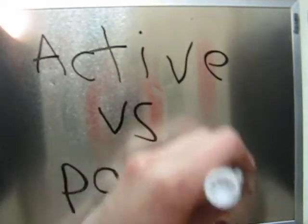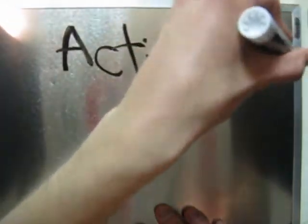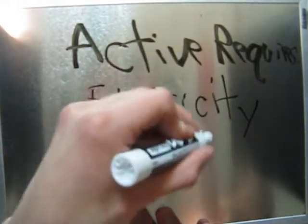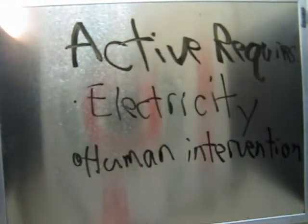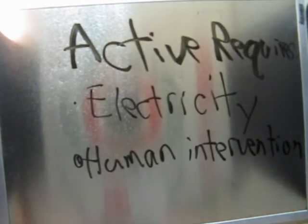So what we're going to be talking about is the difference between passive and active safety features. Active safety features are ones that require things like electricity or direct human intervention to prevent a nuclear power plant from melting down or getting into some sort of catastrophic situation.